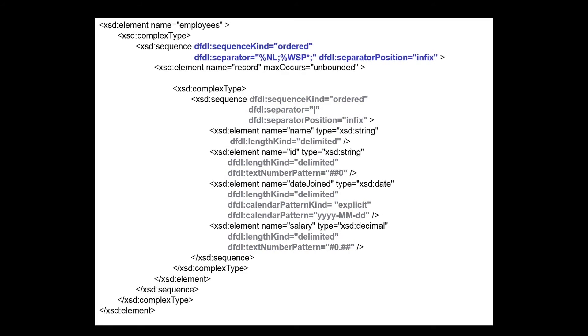We add a property to the outer sequence that defines how the records are separated. In this case, we use the NL entity to cater for new line characters and the WSP entity to cater for zero or more white space characters that might follow the new line. As before, we define the position of the separator as infix. We change the length of the record to be delimited, because each record is a variable length and is delimited by a new line. Because the record element now repeats, we add a property to tell the DFDL processor how to establish the number of occurrences of the record element in the data. We specify parsed, which tells the processor to keep reading occurrences of the record element from the data until no more occurrences can be found.